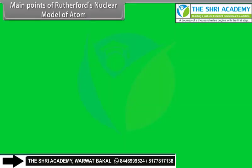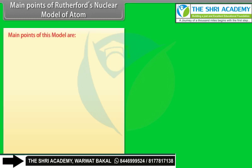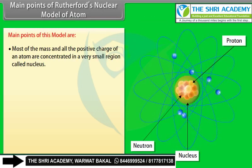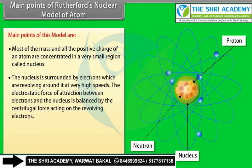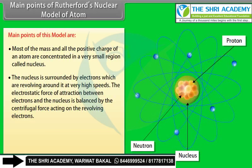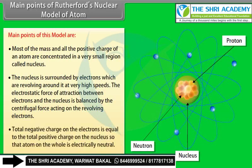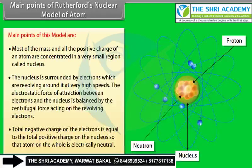Main points of Rutherford's nuclear model: (1) Most of the mass and all the positive charge are concentrated in a very small region called the nucleus. (2) Electrons revolve around the nucleus at very high speeds; the electrostatic force of attraction is balanced by centrifugal force. (3) Total negative charge on electrons equals total positive charge on the nucleus, so the atom is electrically neutral. (4) Most of the space inside an atom is empty.